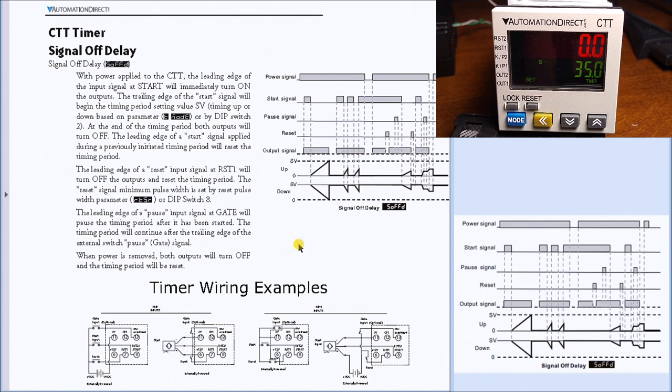So here we have a timing chart, which is the same one that we have over on the right-hand side here, and we have our description of what actually happens. In our case here, you can see that on the trailing edge of our start signal is when the timing actually starts, and it will count up to our set value.